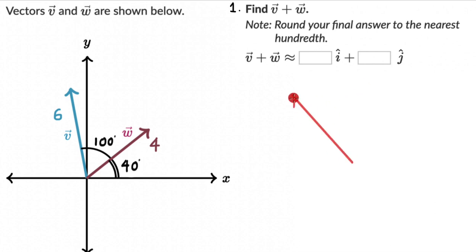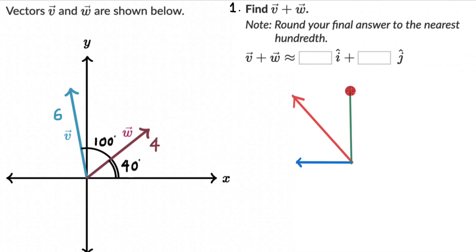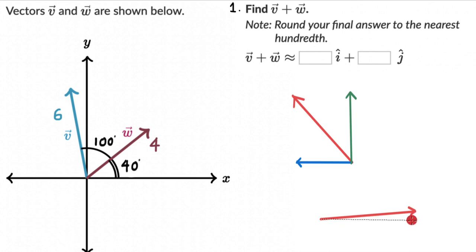A vector component describes the effect of a vector in a given direction. If we have a vector oriented at an angle, it has a horizontal component — shown in blue — representing its effect in the horizontal direction, and a vertical component — shown in green — representing its effect in the vertical direction. Any angled vector will have both a horizontal and a vertical component.